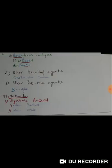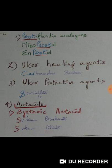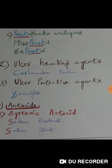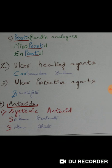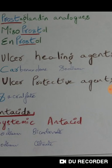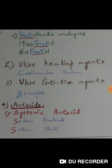Now we have prostaglandin analogs, also under drugs reducing gastric acid secretion. These are quite easy — prostaglandin analogs all contain 'prost,' written in blue. You can see 'prost' in misoprostol and in enprostil as well.